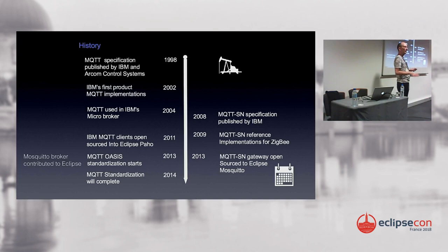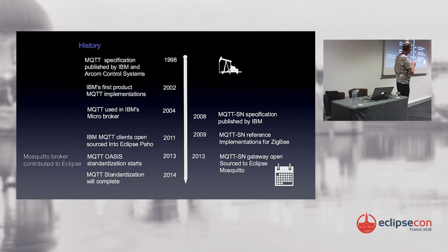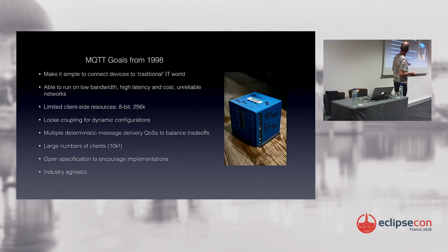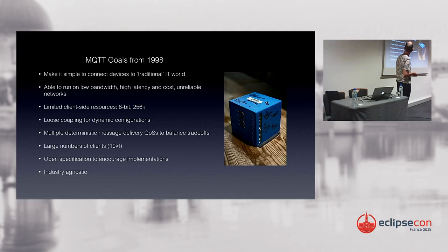MQTT was invented as an intermediary between the SCADA devices and the concentrators, still using satellite communications but avoiding the polling problem. All the polling happens at the concentrators; the rest was report on demand, reducing the frequency of messages sent over satellite links. It was very successful. MQTT comes from a very practical background — it solves a practical problem and was never meant to be a particularly elegant or academic protocol, just solving problems in a practical way.